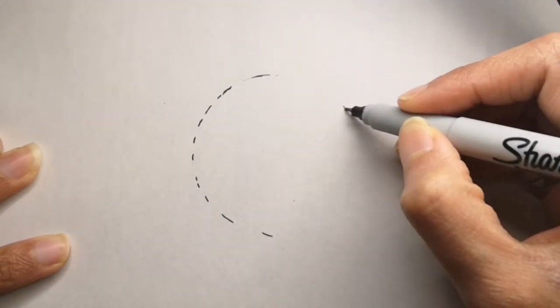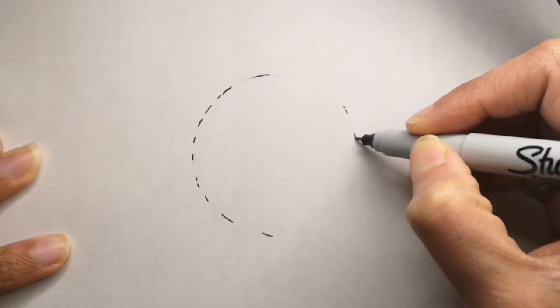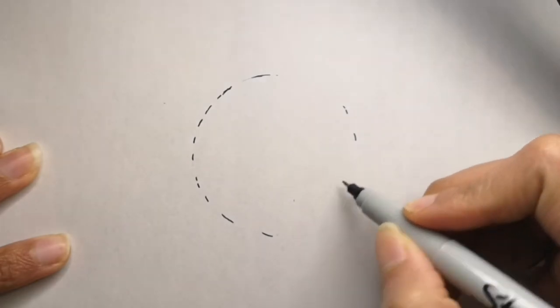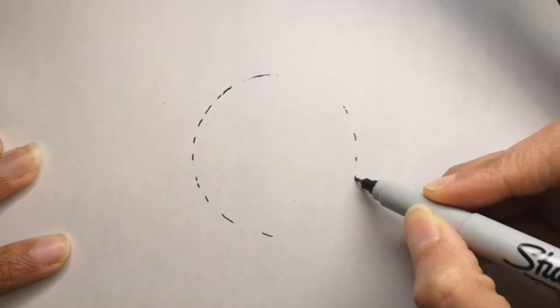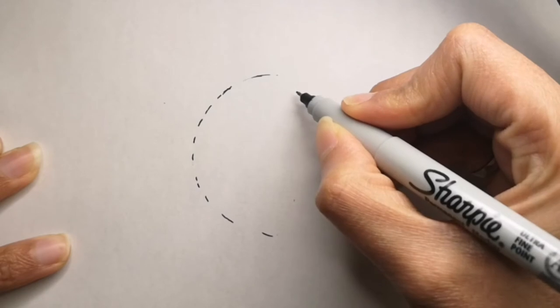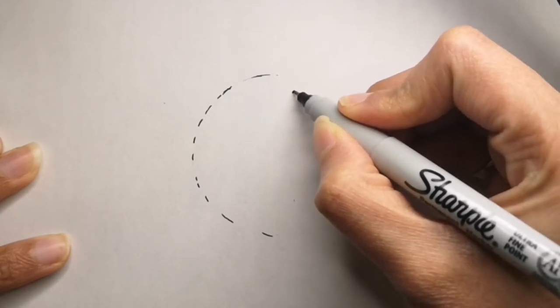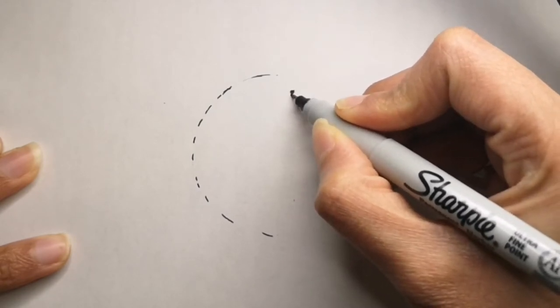For this one I'm going to do it a little different. I will be just drawing a basic outline with the sharpie and then we will go into coloring right away and add all the features with the color pencils.